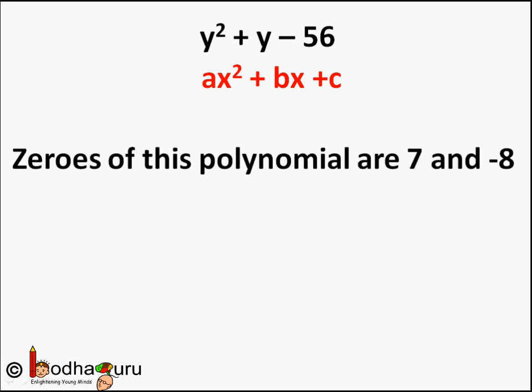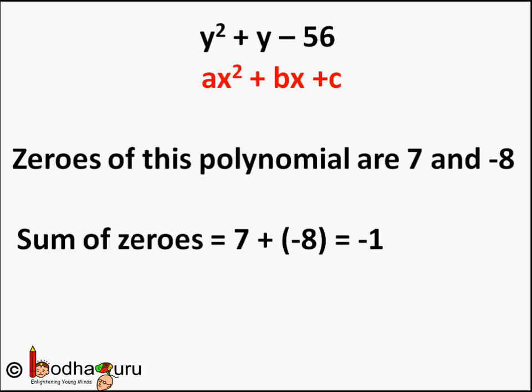Now there is an interesting relation about these zeros and the coefficients of the polynomial. Look carefully — the sum of zeros that we found was 7 + (-8), which equals 7 - 8 = -1. And -1 is equal to minus of the coefficient of y, which is 1, divided by the coefficient of y², which is also 1. So sum of zeros = -b/a.